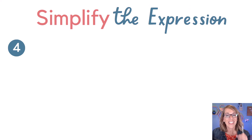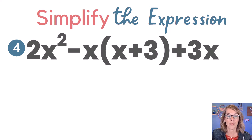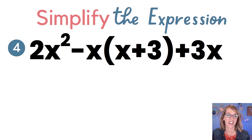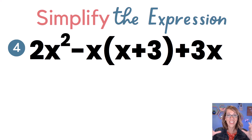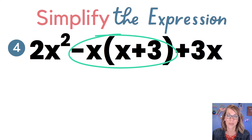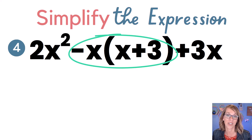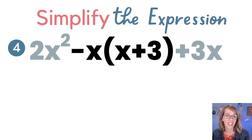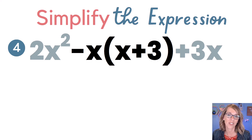Here comes our last one — this is our challenge problem. I've got two x squared minus x times the quantity x plus three — this is where the distribution lives in the middle — and then that plus three on the end. I'm going to challenge you to simplify this expression by doing distribution first and then combining like terms second. If you're following along with me, I'm going to start by ignoring those two terms on the ends and distribute that negative x inside the parentheses.